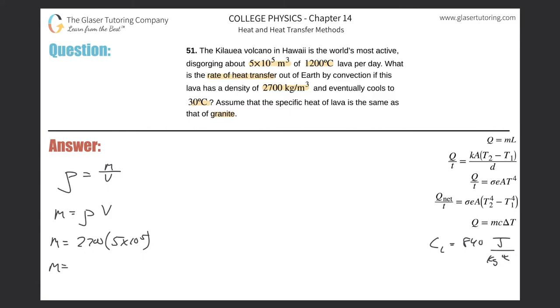So we know those units are going to cancel and leave us with kilograms. Let's find that out: 2700 multiplied by 5×10⁵. We realize this is a tremendously large number, so this is 1.35...